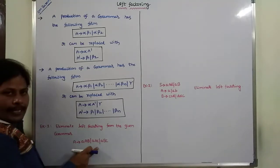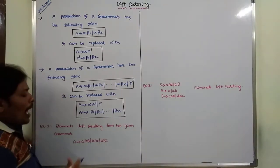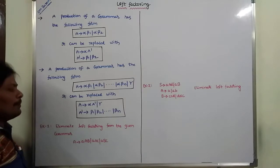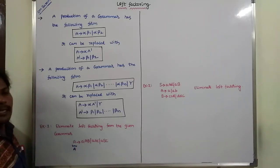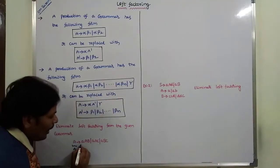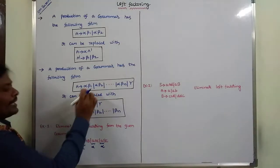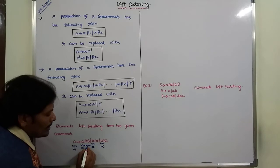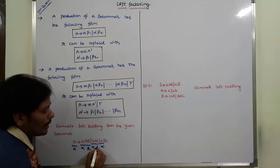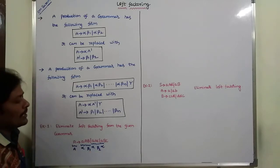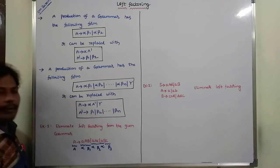By observing the given production, it is in the form of the template. Here, A is the non-terminal. The common prefix is small 'a', which can be represented by alpha. After alpha, the remaining combinations are beta1, beta2, and beta3 respectively — representing the combinations of terminals and non-terminals that follow.